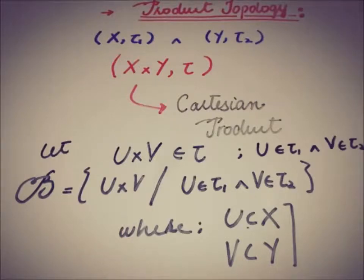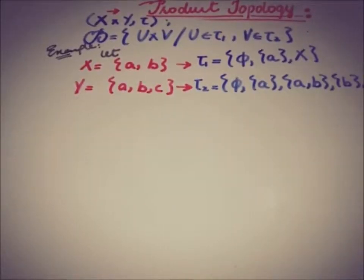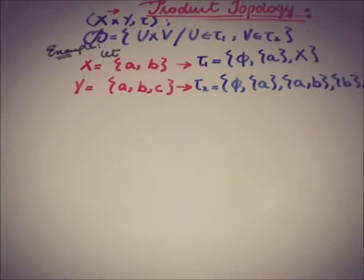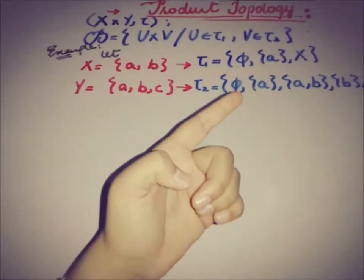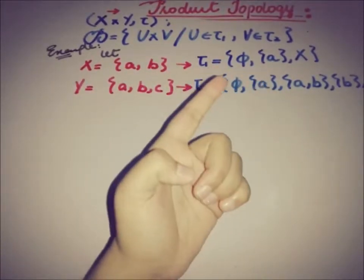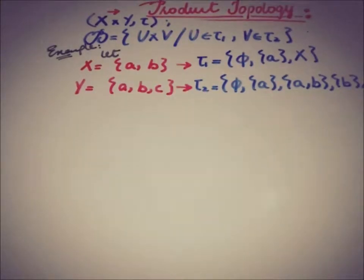Now moving toward an example of this Cartesian product X cross Y. We have a topological space X containing elements {a, b} with topology tau1, and another topological space Y containing {a, b, c} with topology tau2. We have to figure out the elements of the basis of the Cartesian product X cross Y. Let's assume the open sets of X are phi, {a}, and X, since the empty set and X are always in any topology.